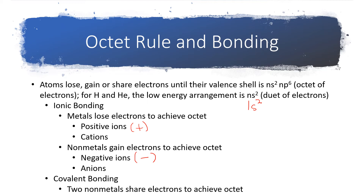Now, to help you keep straight which one's the cation and which one is the anion, here's a little trick. If you look in the middle of the word cation, there's a T, and that T looks an awful lot like a plus. If you look at the middle of the word anion, you'll find an N, and the N stands for negative.